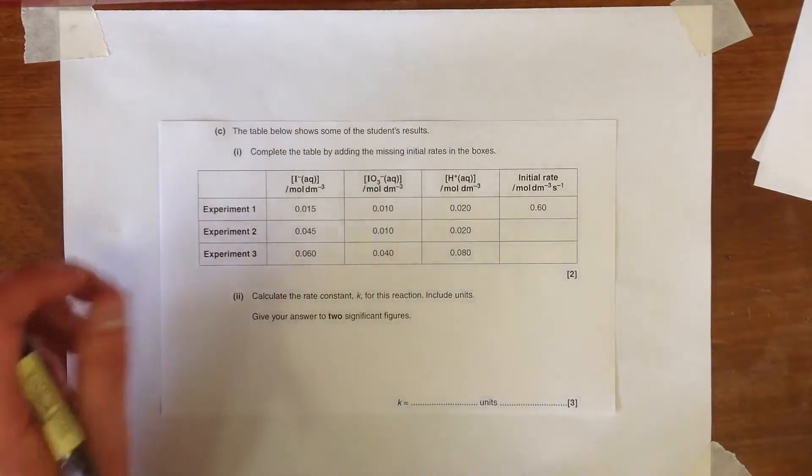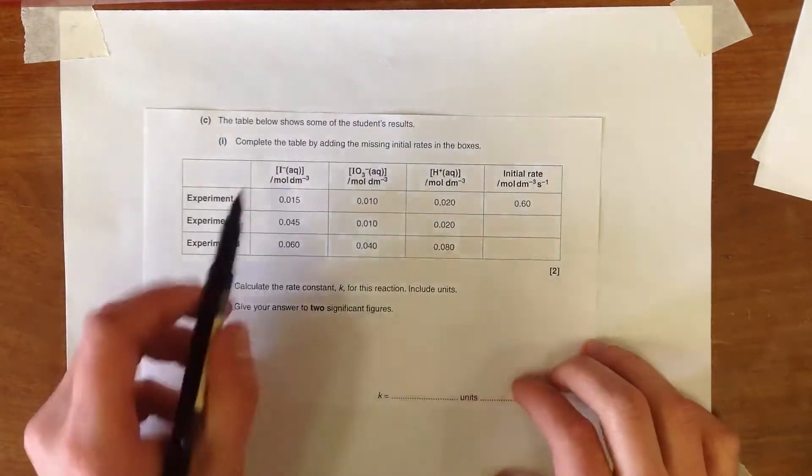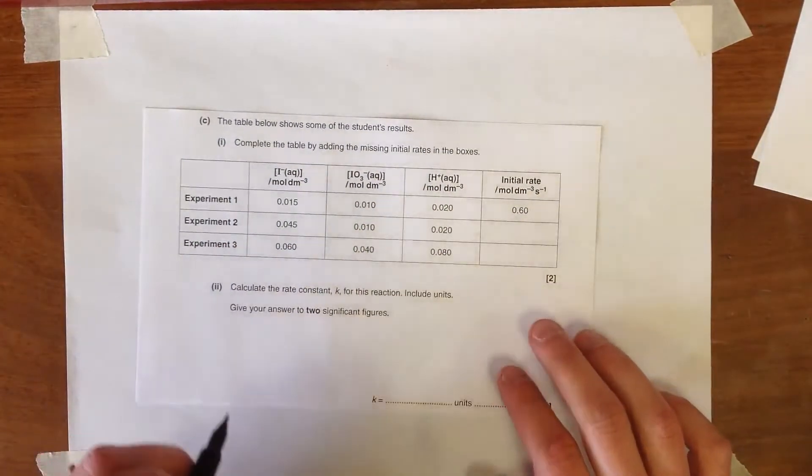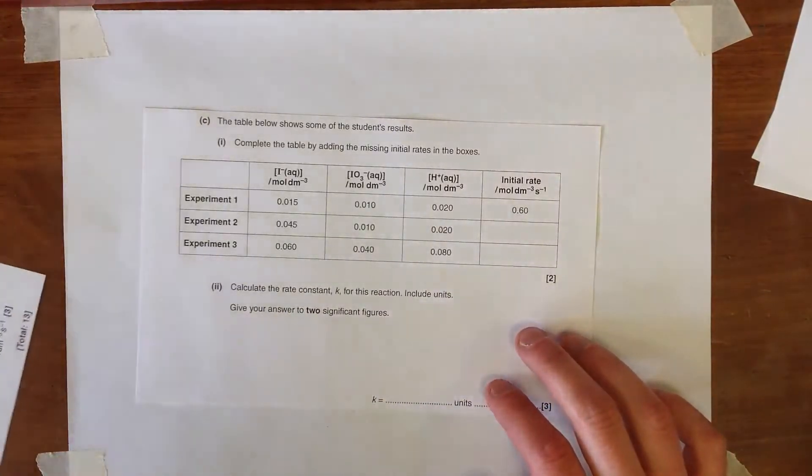Question 4 part C. Don't be fooled here. There's actually a question here. You can see there's two marks here for completing the table by adding the initial rates in the boxes. Now it's always really useful in these questions to do two things.